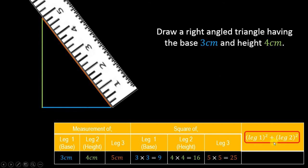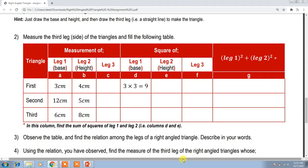We have already found the squares of Leg 1 and Leg 2. The square of Leg 1 was 9 and the square of Leg 2 was 16. We simply add these two together, and our final answer comes to 25. So this is how you do this part.